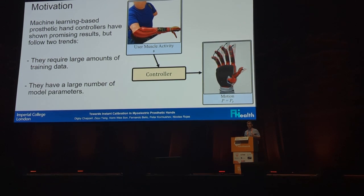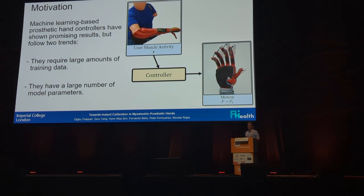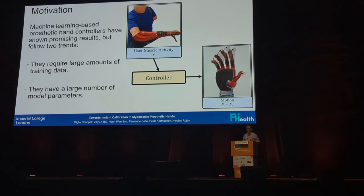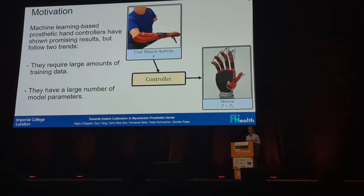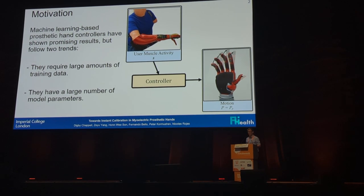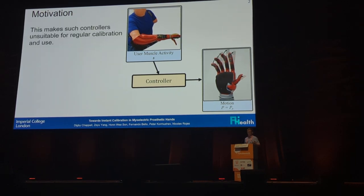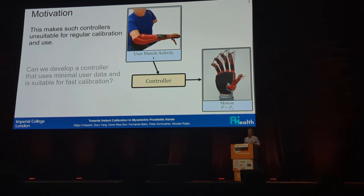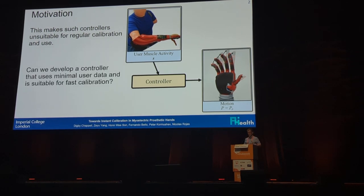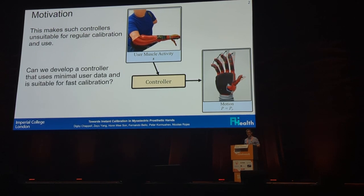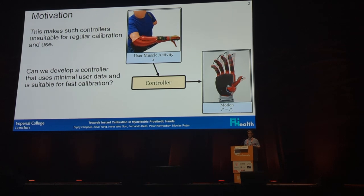The other trend is that they have a large number of model parameters — particularly those that train a model on a large population of people then transfer it onto a user — which requires a model that is an order of magnitude or two larger than what we would need for just a personalized model. All in all, this makes them unsuitable for regular calibration and use, and what we want to know is: can we develop a controller that uses minimal user data and is suitable for fast calibration?